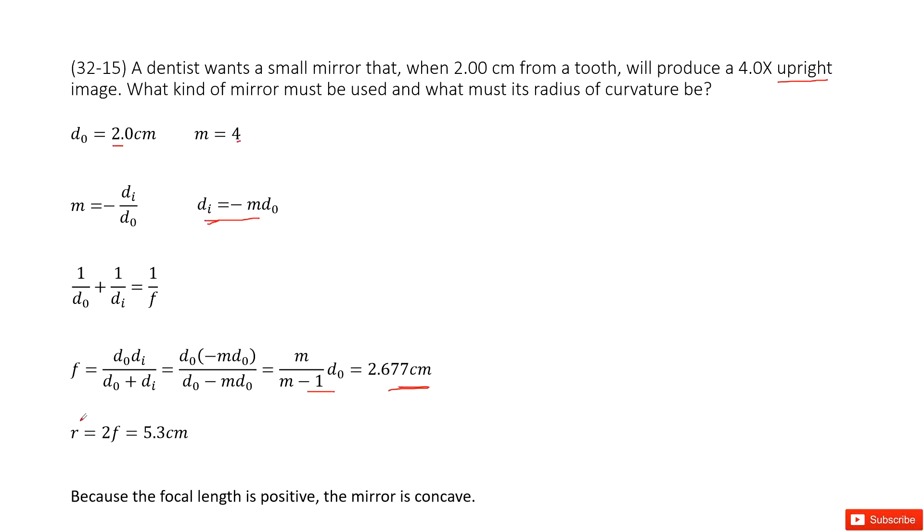After we know the focal distance, we can know the radius. R equals 2 times F, so now it becomes 5.3 cm.